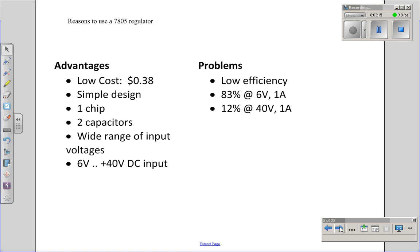It gives the advantages and disadvantages of a 7805 regulator. The advantage is it's very low cost, very simple design, easy to get to work. It works for a very wide range of voltages, anywhere between 6 and 40 volts.